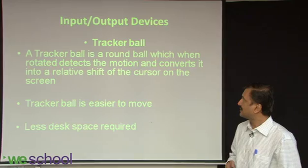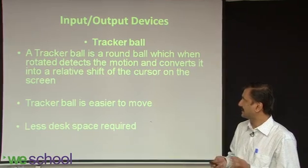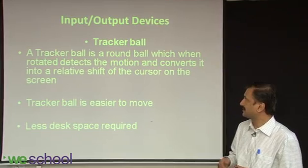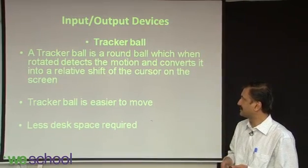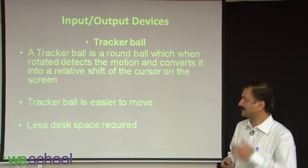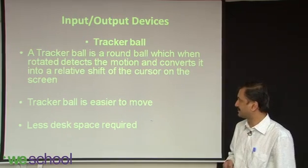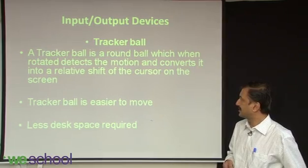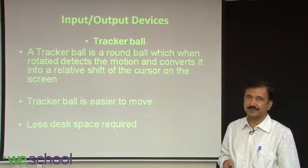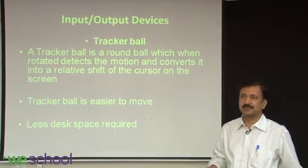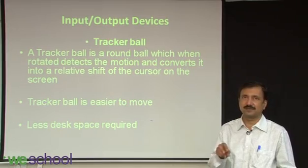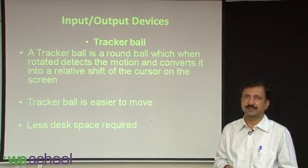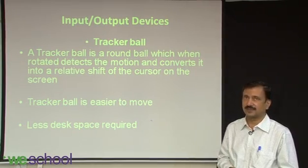The tracker ball detects the movement of your finger on the ball, rotates the ball, and sends those X-Y directions back to the cursor control. The advantage is that it occupies less space — sometimes on a small desk it's very difficult to find enough space to move the mouse around, whereas a tracker ball is fitted into the system itself and virtually occupies no space at all.